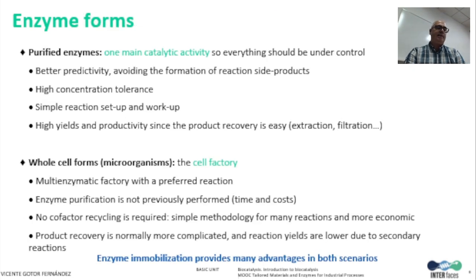Another important fact is the catalyst form, which can be used in purified or whole-cell form. The use of purified enzymes is more predictable, so fewer by-products can be formed, and simpler reaction setups and downstream processes are required for product isolation. On the other hand, the use of microorganisms involves more economical processes, since external cofactor addition is not required in these multi-enzymatic cell factories, although normally product formation and recovery are less efficient. The possibility to immobilize both catalyst forms allows the development of more robust protocols where reuse of the enzyme is possible.